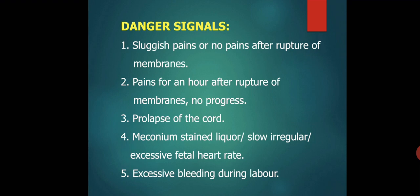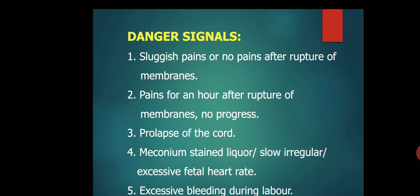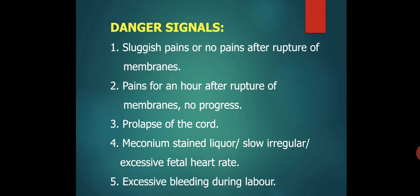Danger signs include: sluggish pain or no pain after rupture of membranes; pain for an hour after rupture of membranes but no progress in labor; prolapse of the cord; meconium-stained liquor; slow, irregular, or excessive fetal heart rate; and excessive bleeding during labor.